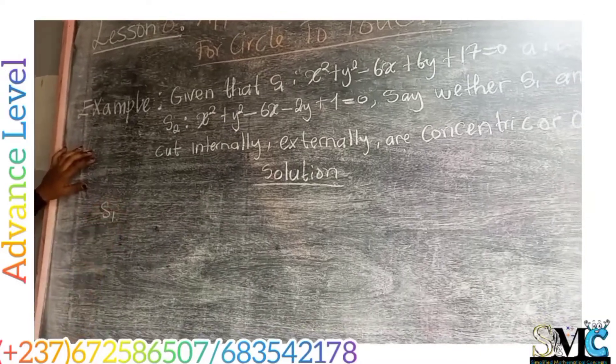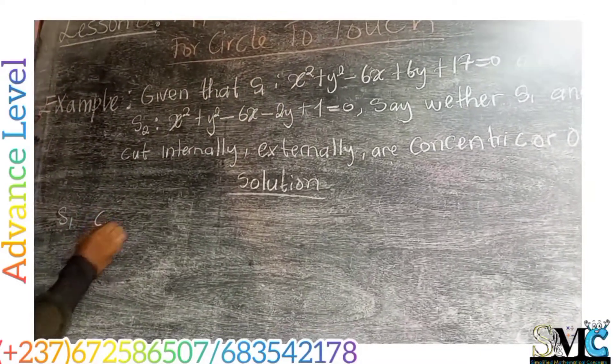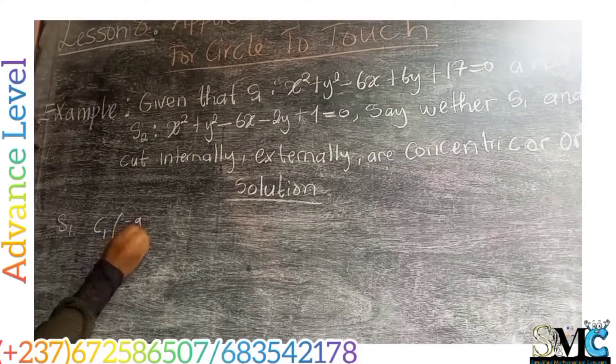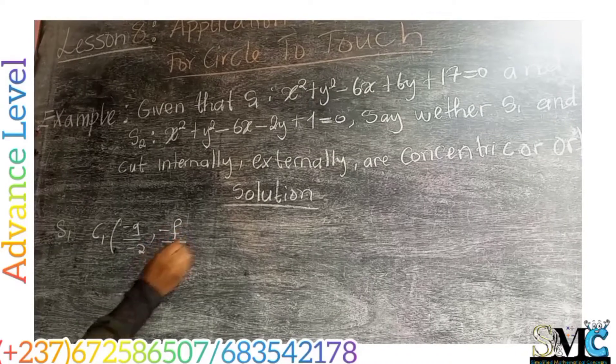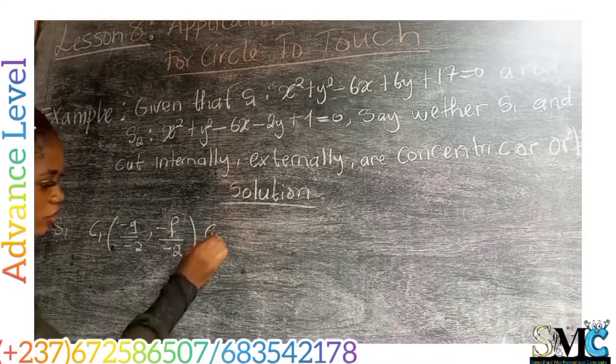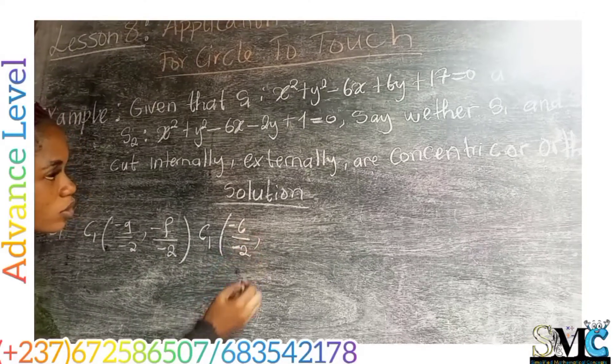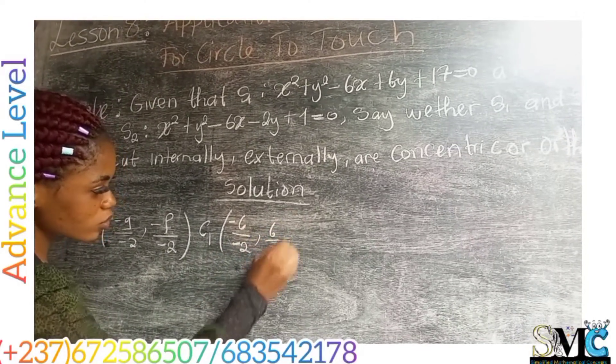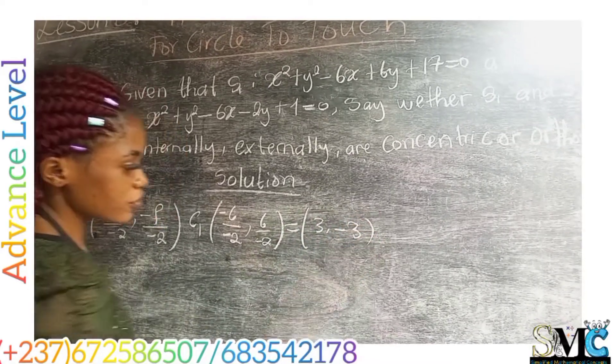So for S1, S1 has equation this, and we saw that the center of C1 is simply given by negative G on negative 2 and negative F on negative 2. So the center for C1 will simply be negative 6 on negative 2 and 6 on negative 2, which gives us 3, negative 3.